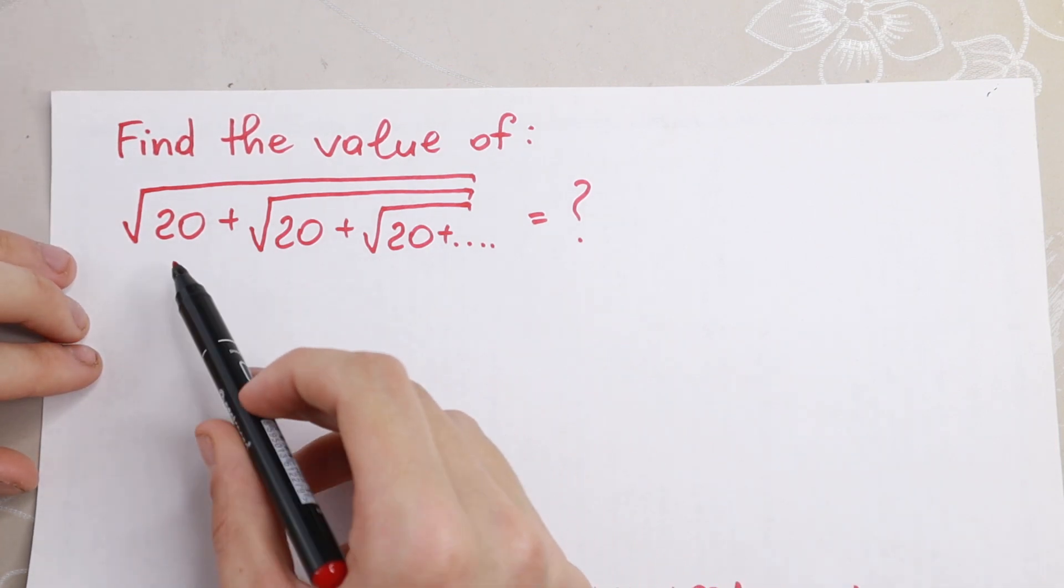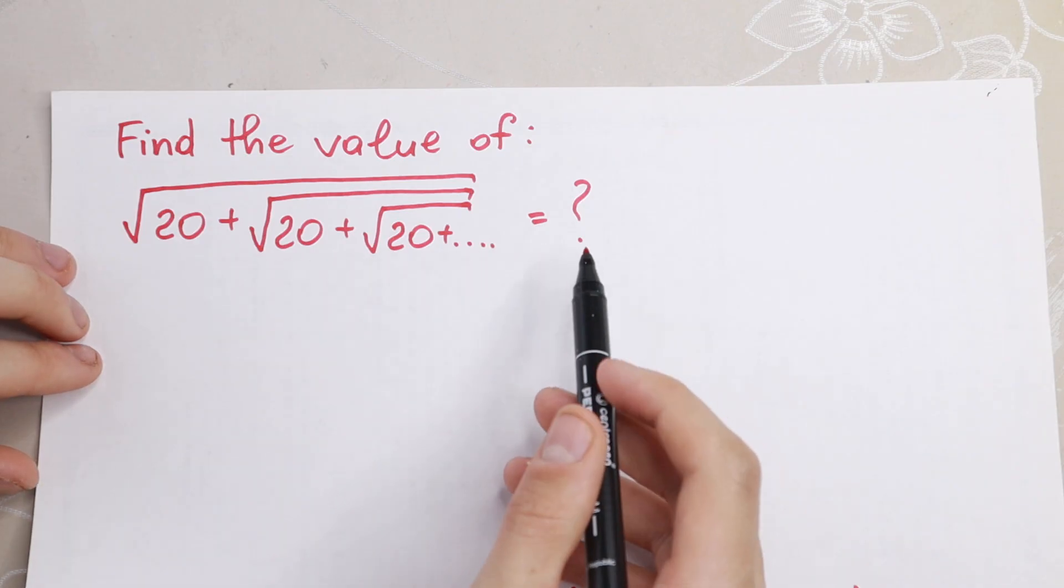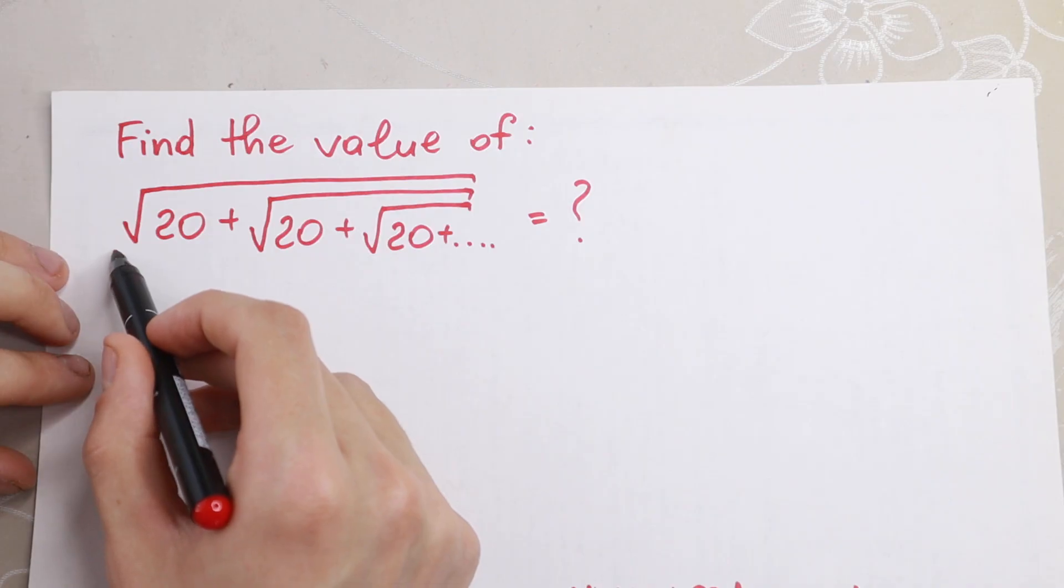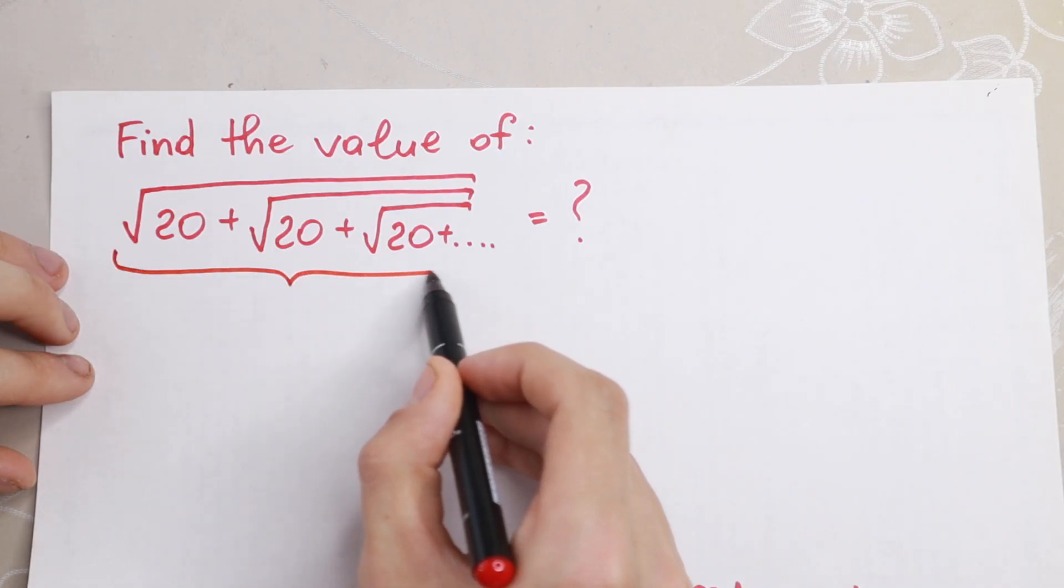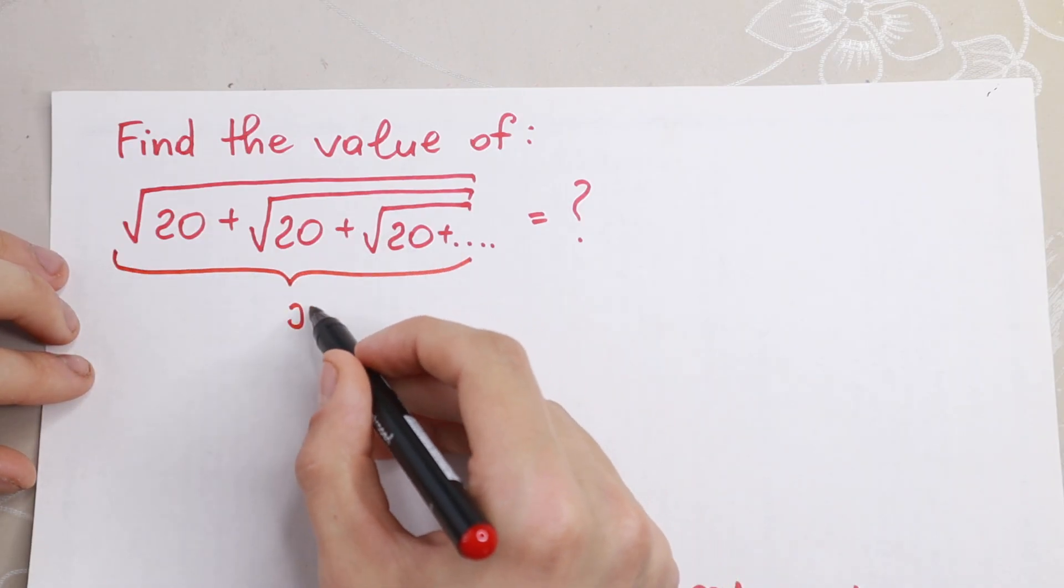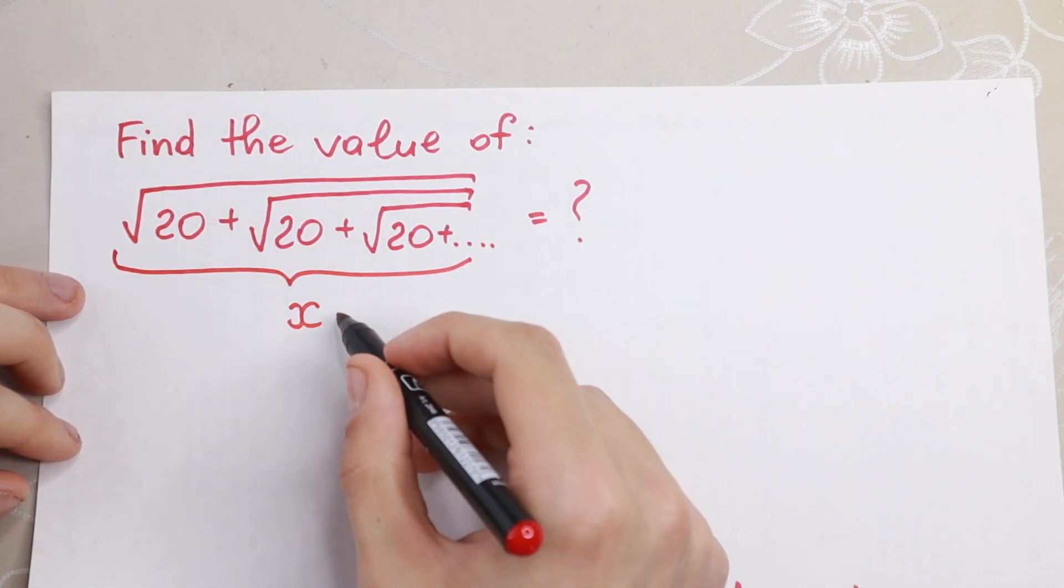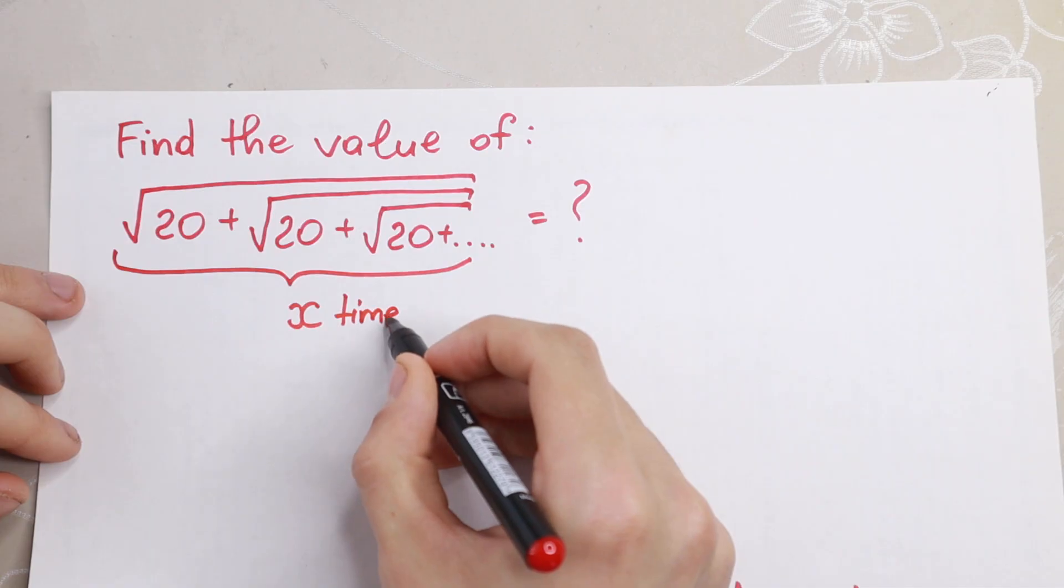Take a look. First of all, we have an infinite sum, and it's really good to see that this will be our x. So we add this square root of 20 x times. We add this x times.